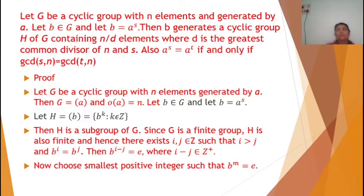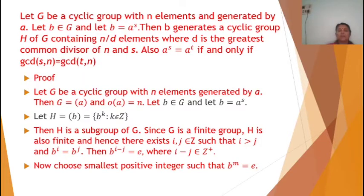Then H is a subgroup of G. The elements of H are in the form a raised to sk, which are all in G. When k equals 0, the identity is in H; for any b raised to k, b raised to minus k is also in H. So H is a subgroup of G. Since G is finite, H is also finite.